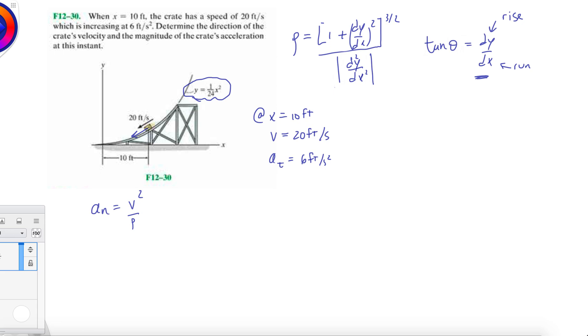So 1 plus dy/dx, where y is x squared over 24. Let's do it in steps: dy/dx is 2x over 24, which is x over 12. And then the second derivative d²y/dx² is 1 over 12.